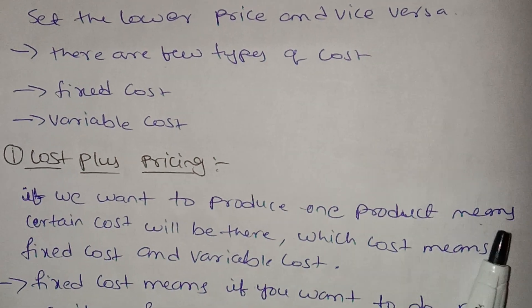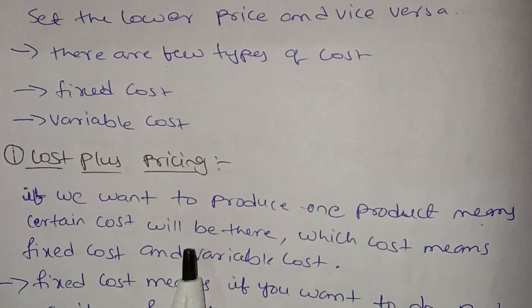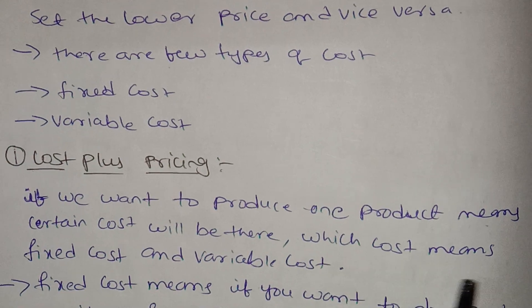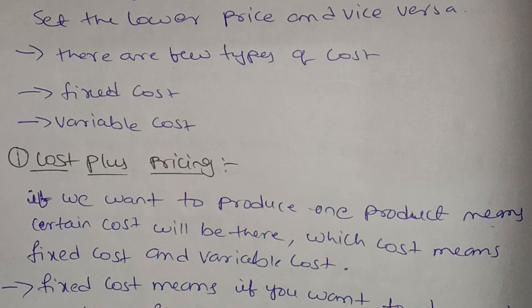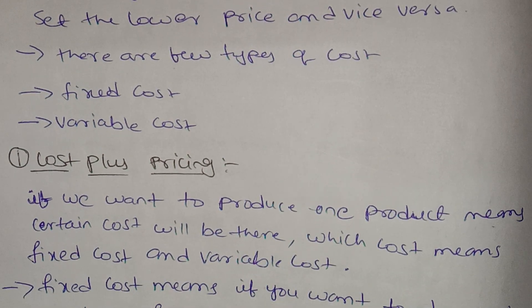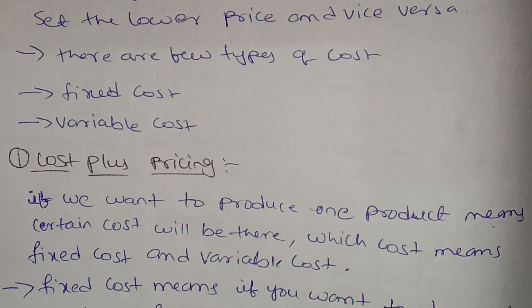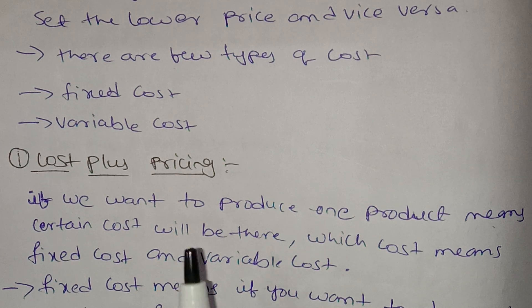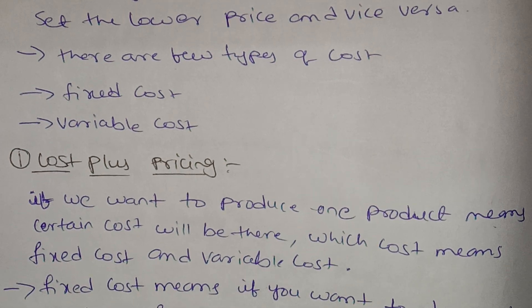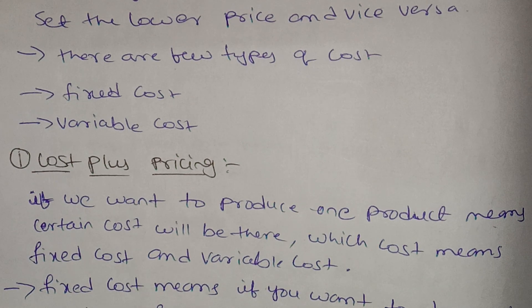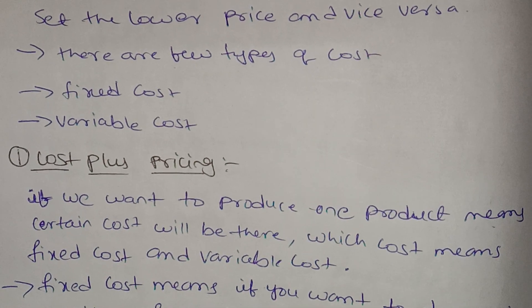There are two types of cost: fixed cost and variable cost. By combining fixed cost and variable cost, we will produce the final total cost.